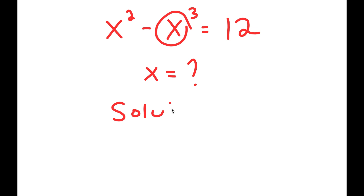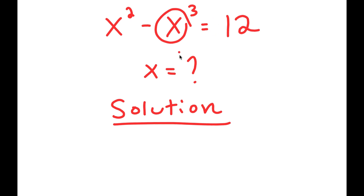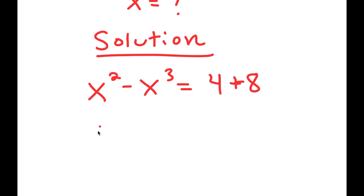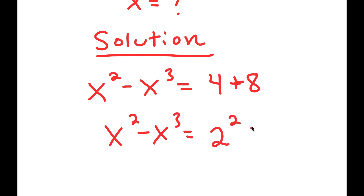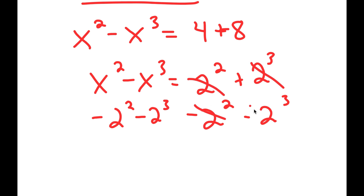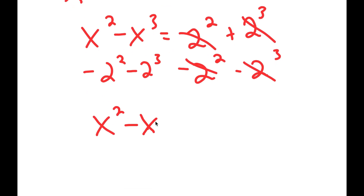For my solution, I'm going to start by rewriting 12 as 4 plus 8, so I get x squared minus x to the power of 3 is equal to 4 plus 8. The reason is that 4 is the same as 2 squared and 8 is 2 to the power of 3. Now I subtract 2 squared and 2 to the power of 3 from both sides, so those terms cancel, leaving x squared minus x to the power of 3 minus 2 squared minus 2 to the power of 3 is equal to 0.